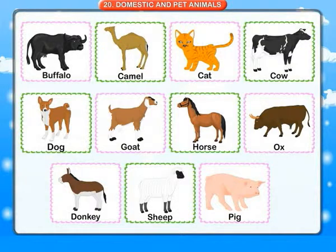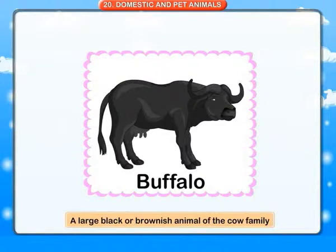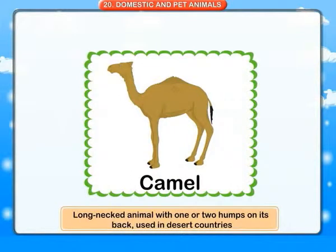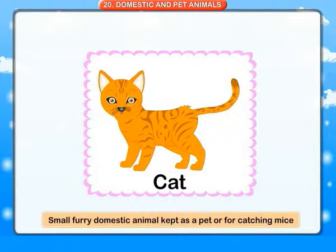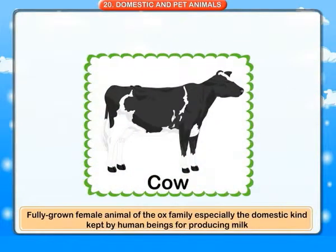Domestic and pet animals. Buffalo: a large black or brownish animal of the cow family. Camel: a long-necked animal with one or two humps on its back, used in desert countries. Cat: a small furry domestic animal kept as a pet or for catching mice. Cow: a fully grown female animal of the ox family, specially the domestic kind, kept by human beings for producing milk.